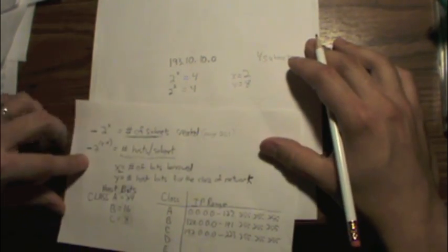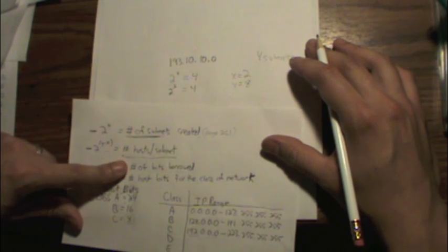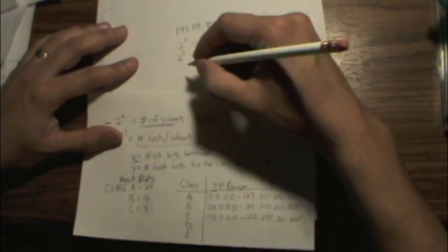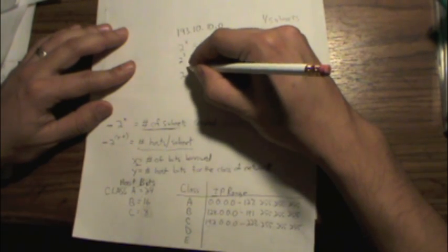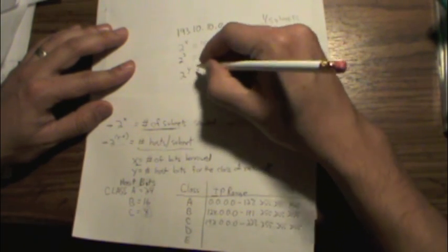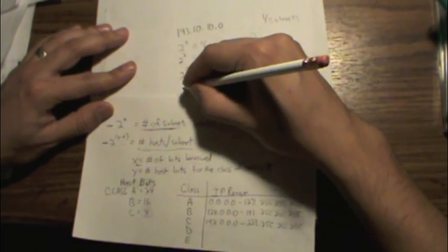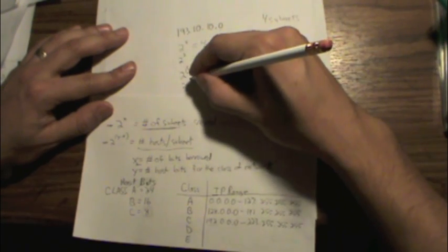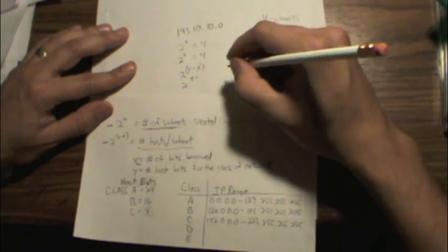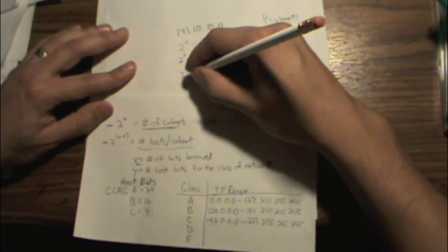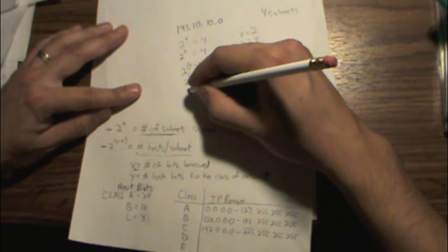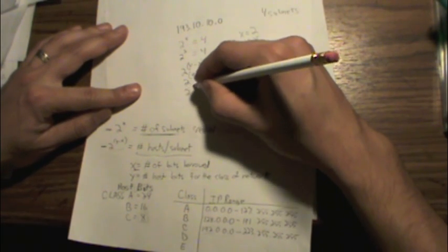So then we can just apply the next equation here, which is 2 to the y minus x, 2 to the 8th minus 2. When we drop that down a little bit further, we get 2 to the 6th.